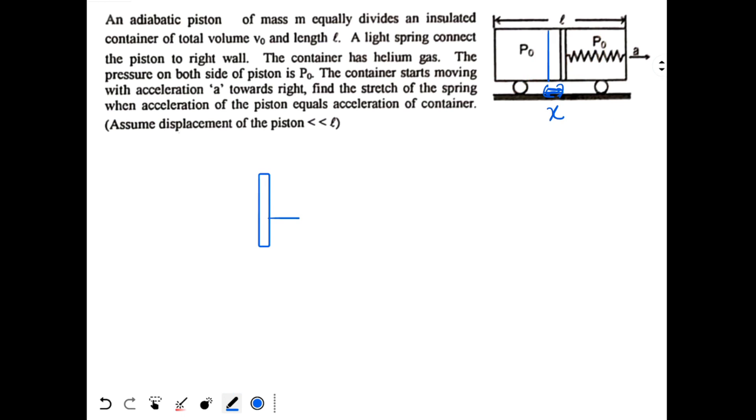Spring force will be acting Kx. Then pressure on the left will become P0 plus DP because we have small displacement. The question says small displacement. On the right the pressure will be P0 minus DP. So here we have P0 plus DP times area, force is acting in this direction.